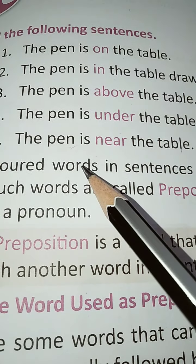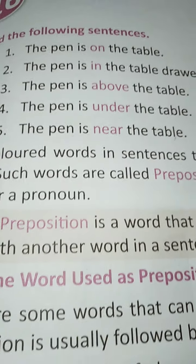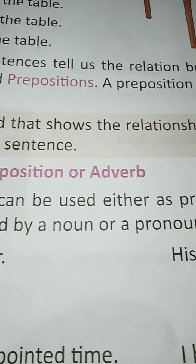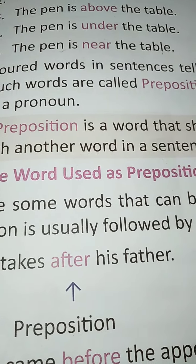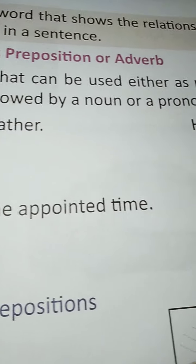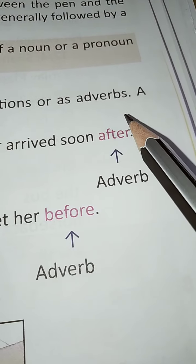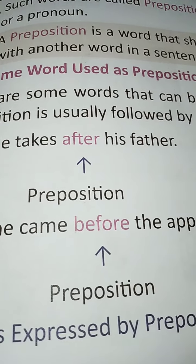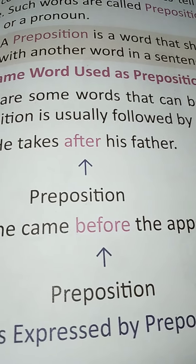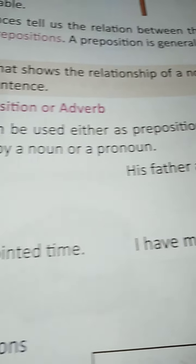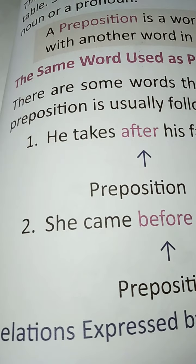The preposition relates the noun and the pronoun with the other word in a sentence, and it is generally followed by a noun or a pronoun. Now, the same word can be used as a preposition or as an adverb. There are some words in grammar that can be used either as prepositions or as adverbs. A preposition is usually followed by a noun or a pronoun.